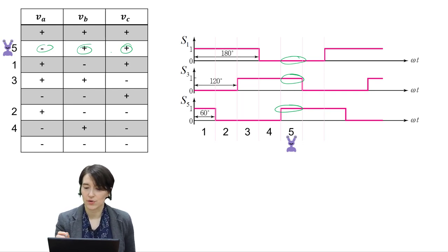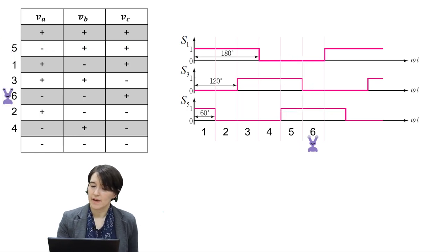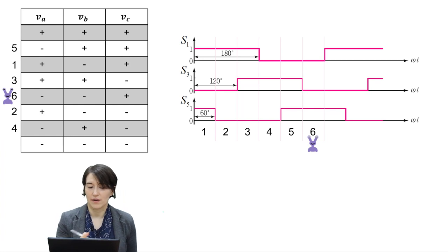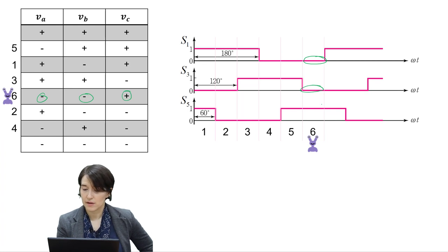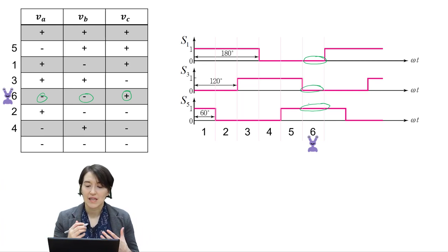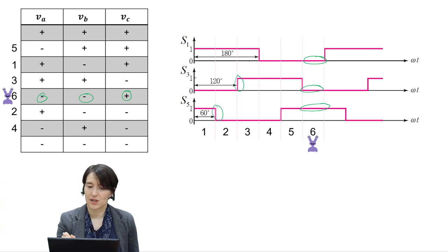There is one more region. Only S3 is going to change here, going from a positive to a negative position for pole B. In region six: VA (S1) is low, VB (S3) is low, and VC (S5) is high. Notice that in each of these regions, two states are maintained and only one is switching — first S5 changes, then S3, then S1, repeating that sequence.